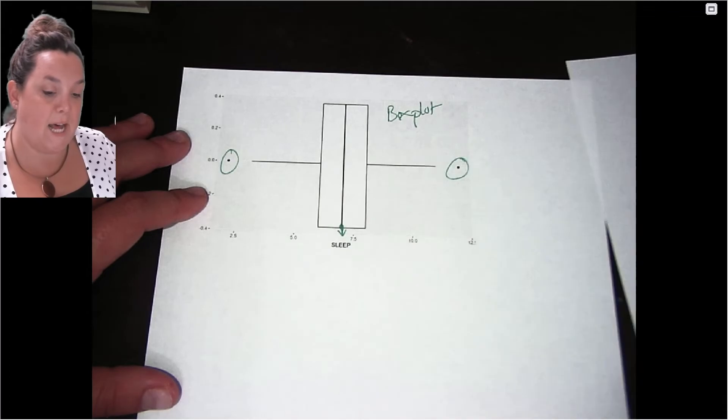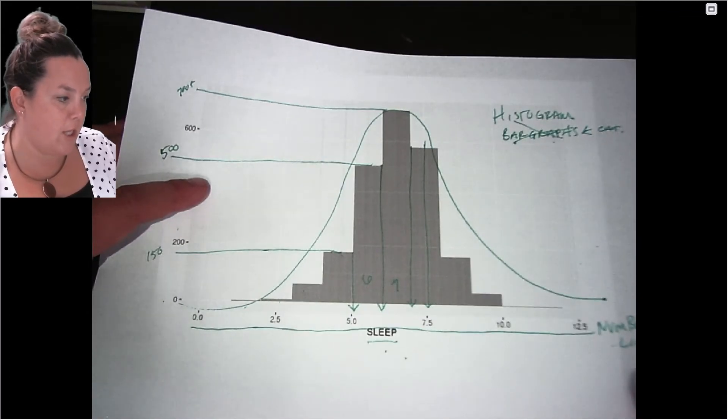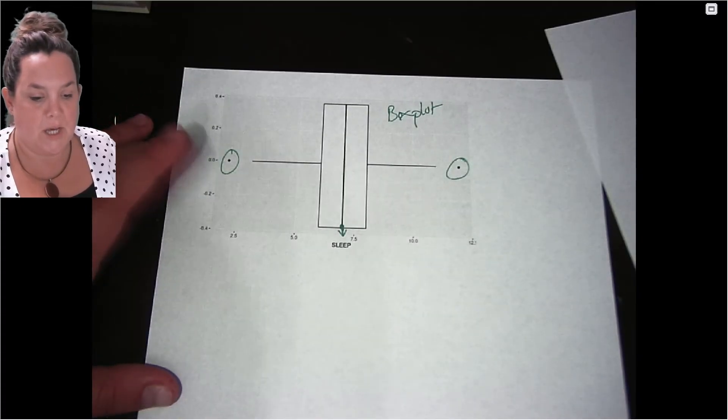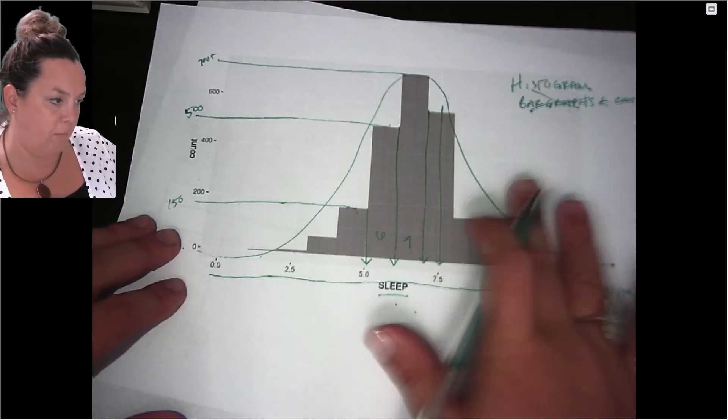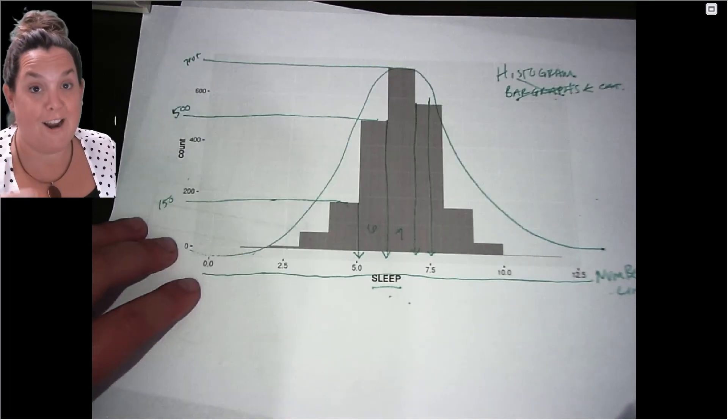But as I said, with the histogram the benefit here is that you actually see the shape, whereas with the box plot it's more difficult to see. So pretty straightforward to read a histogram - we will look at these in more detail when we start to describe distributions. See you there!